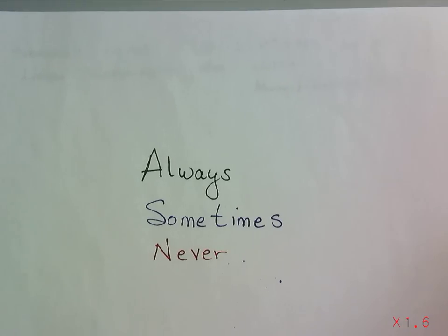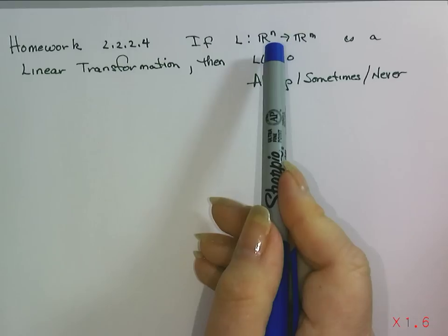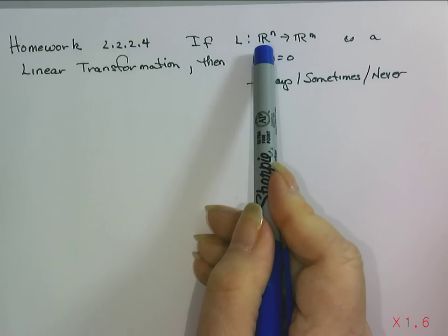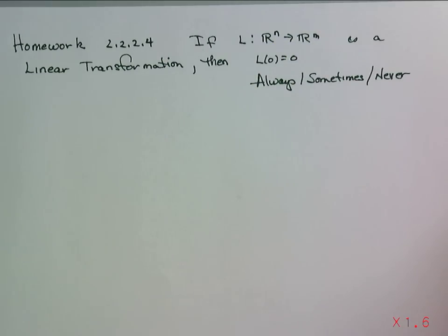Always, sometimes, never. Is it the case that if we have a vector function that maps a vector of size n to a vector of size m that is a linear transformation, is it always, sometimes, or never the case that L of 0 is equal to 0?